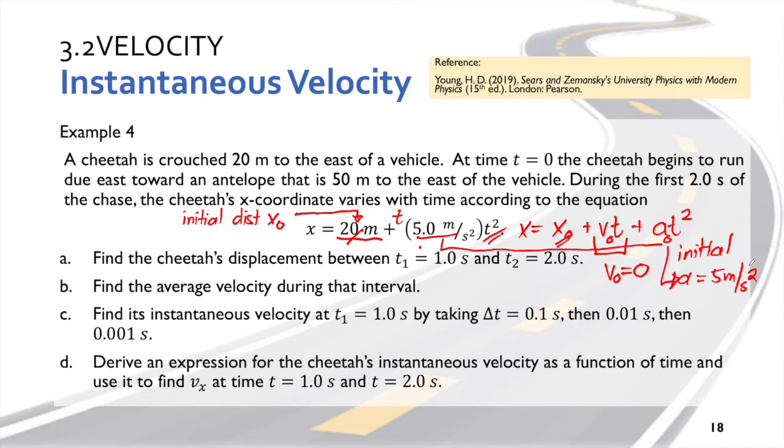Now we have here questions. First, find the cheetah's displacement at t = 1.0 seconds and t = 2.0 seconds. Then after that, find the average velocity during the interval.